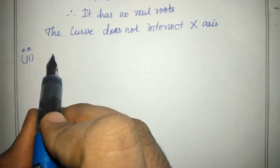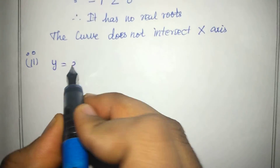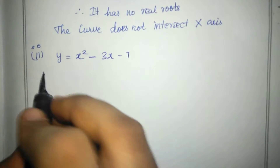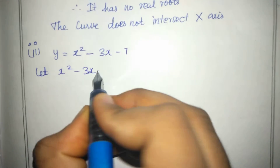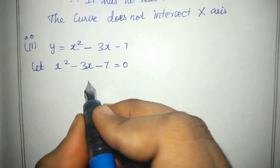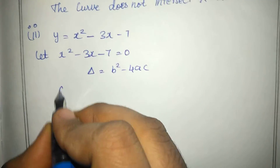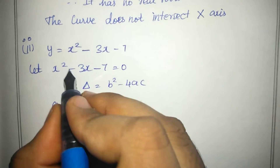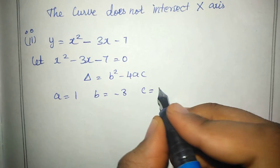In the second subdivision, y is equal to x-squared minus 3x minus 7. Let x-squared minus 3x minus 7 equal to 0. Using the discriminant formula b² minus 4ac, the values are: a value is 1, b value is minus 3, c value is minus 7.